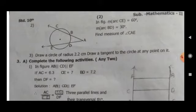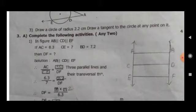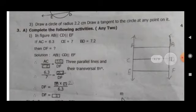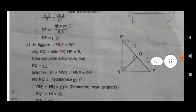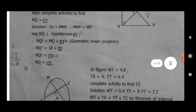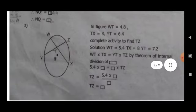Question 3 A, complete the following activities. For marks at 4. First, in figure AB is parallel to CD is parallel to EF. If AC is equal to 6.3, CE is equal to 7, BD is equal to 7.2, then find DF. Complete the activity. Second, complete the activity to find NQ. Third, in figure NQ is equal to 4.8, TX is equal to 8, YT is equal to 6.4. Complete activity to find TZ.